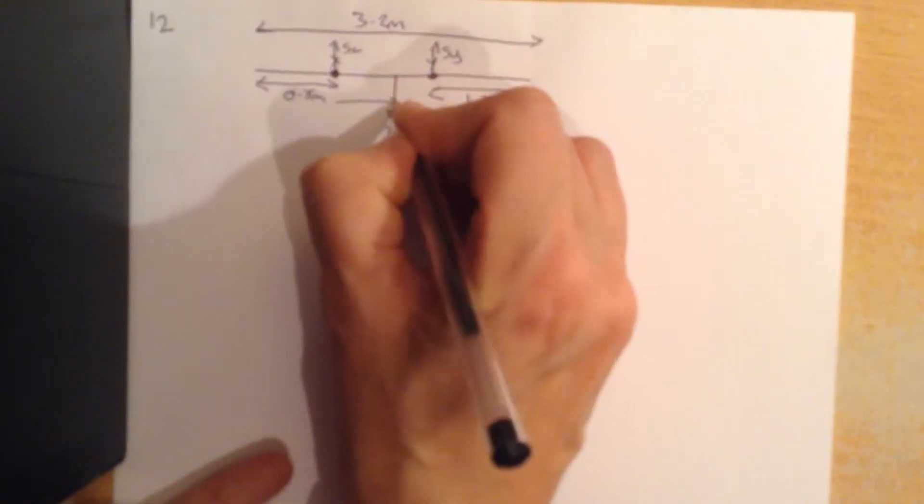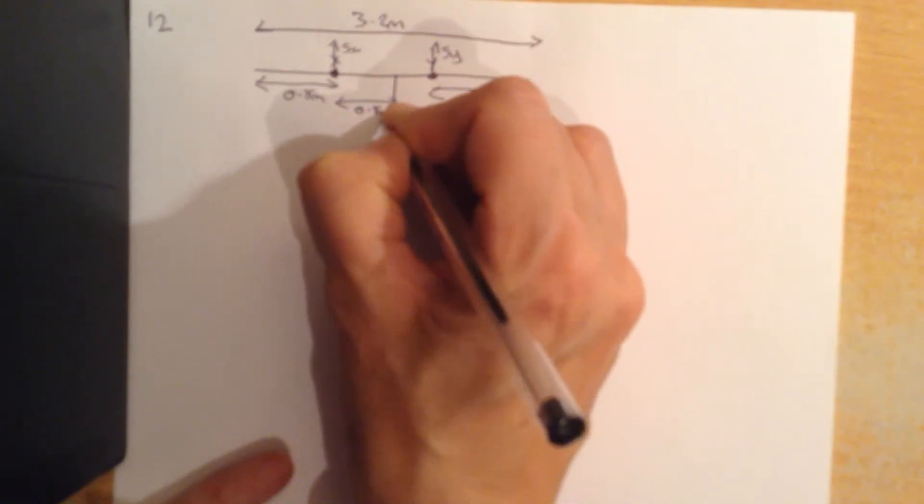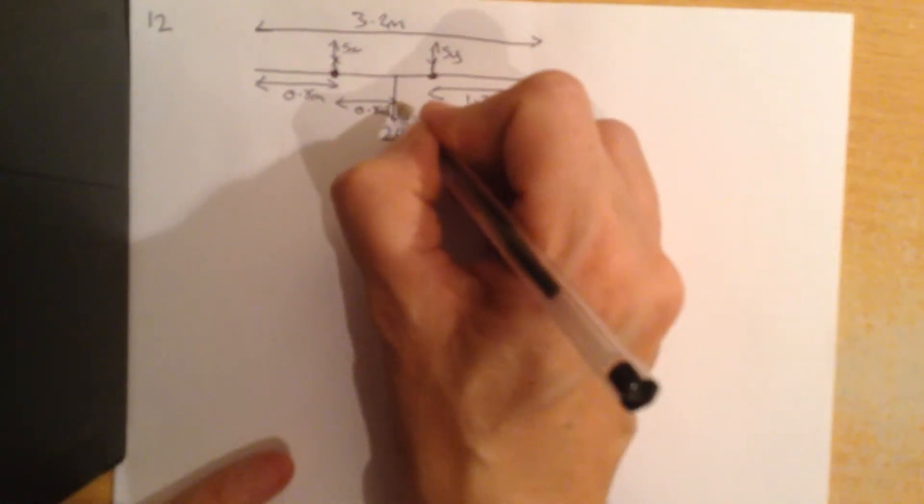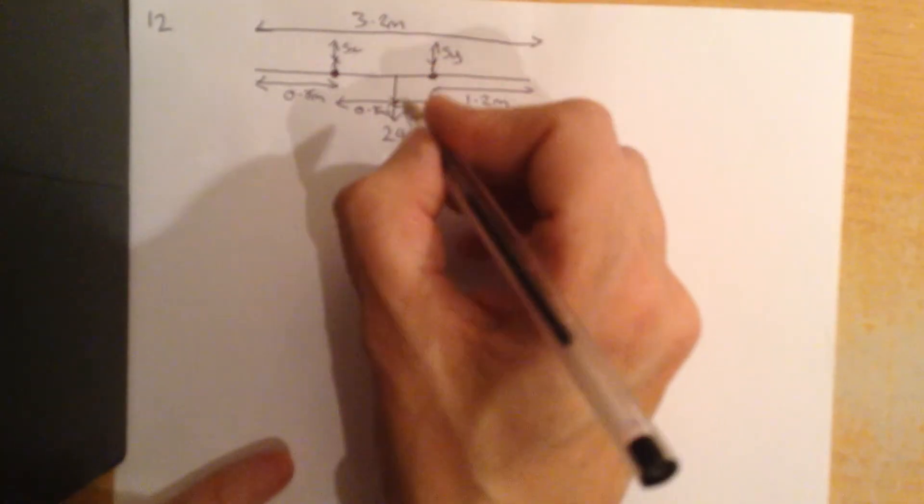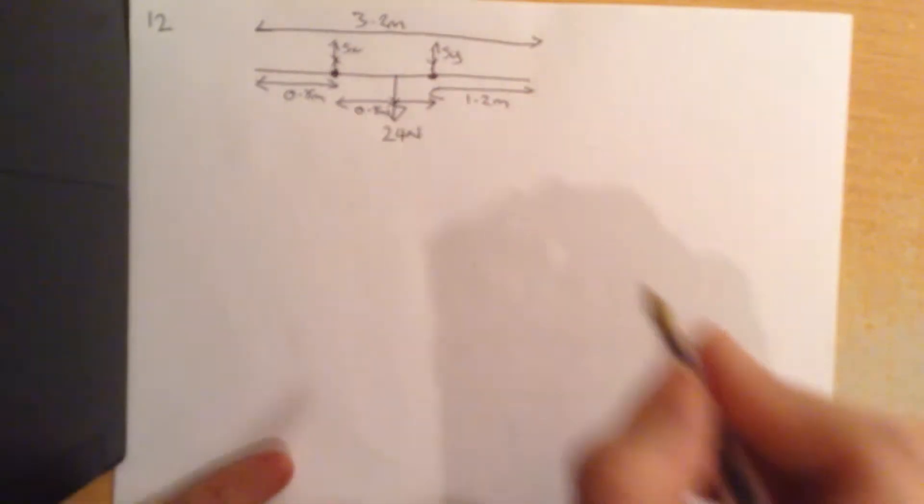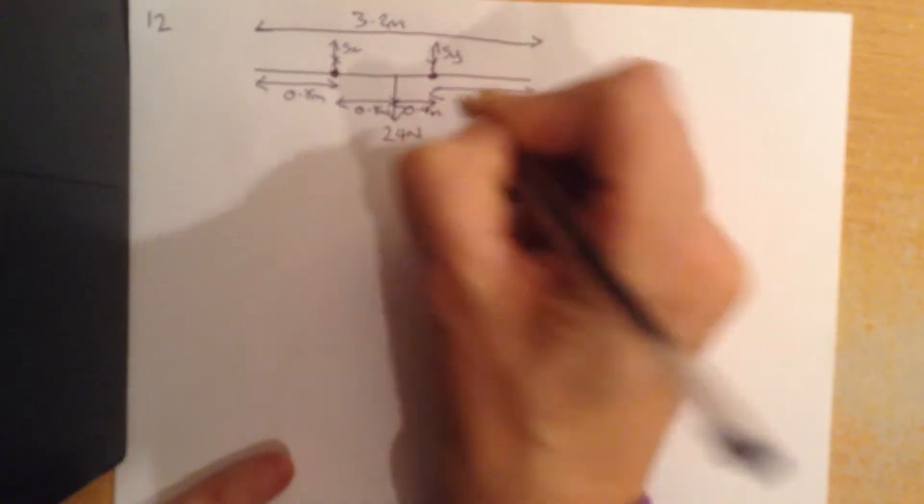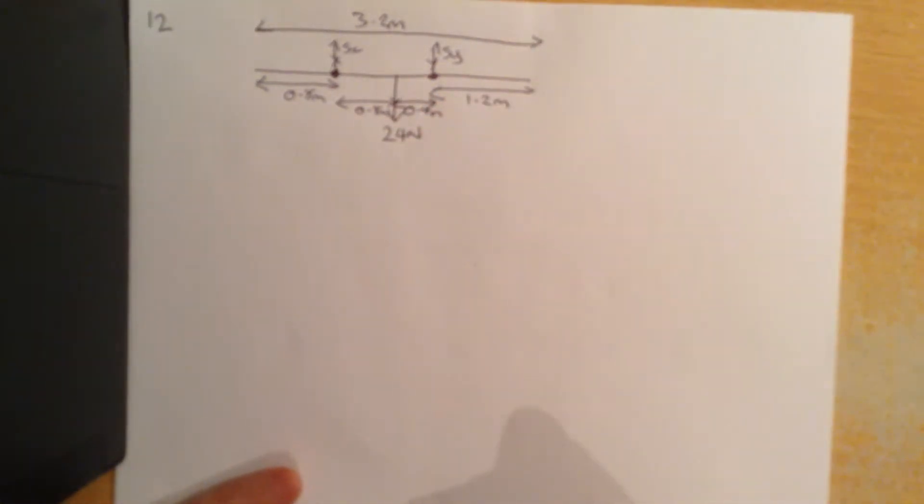So if that distance is 3.2, this distance from here to here, it's going to be another 0.8, and this distance from there to there is 0.4. Just double checking my maths there. Good.